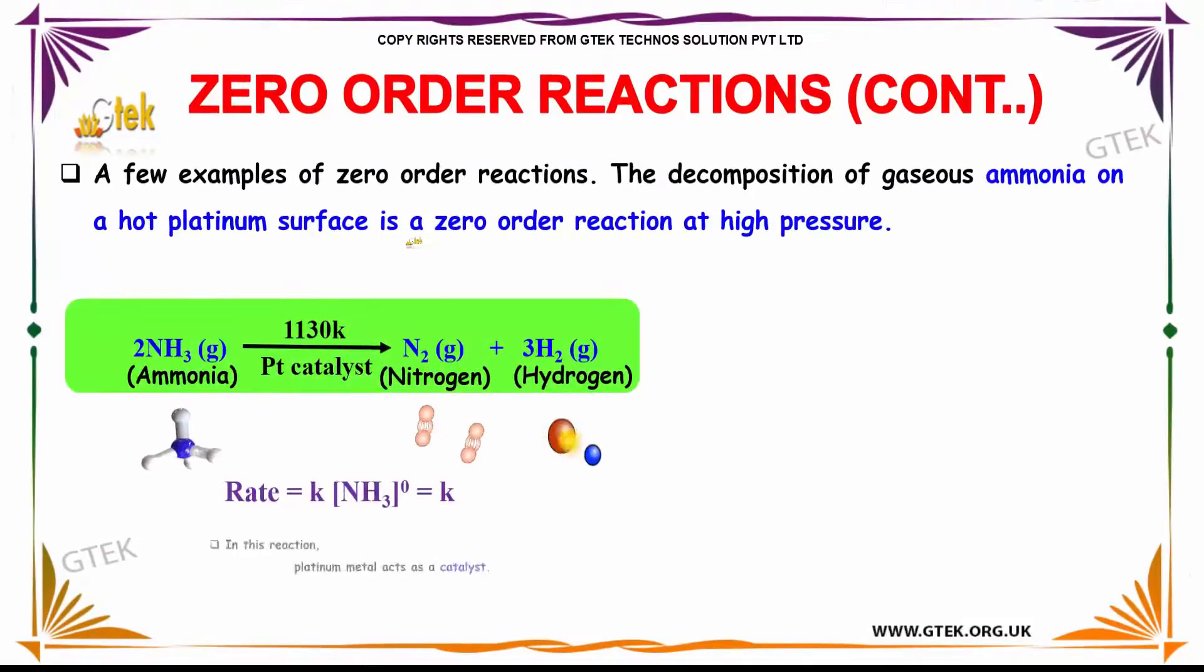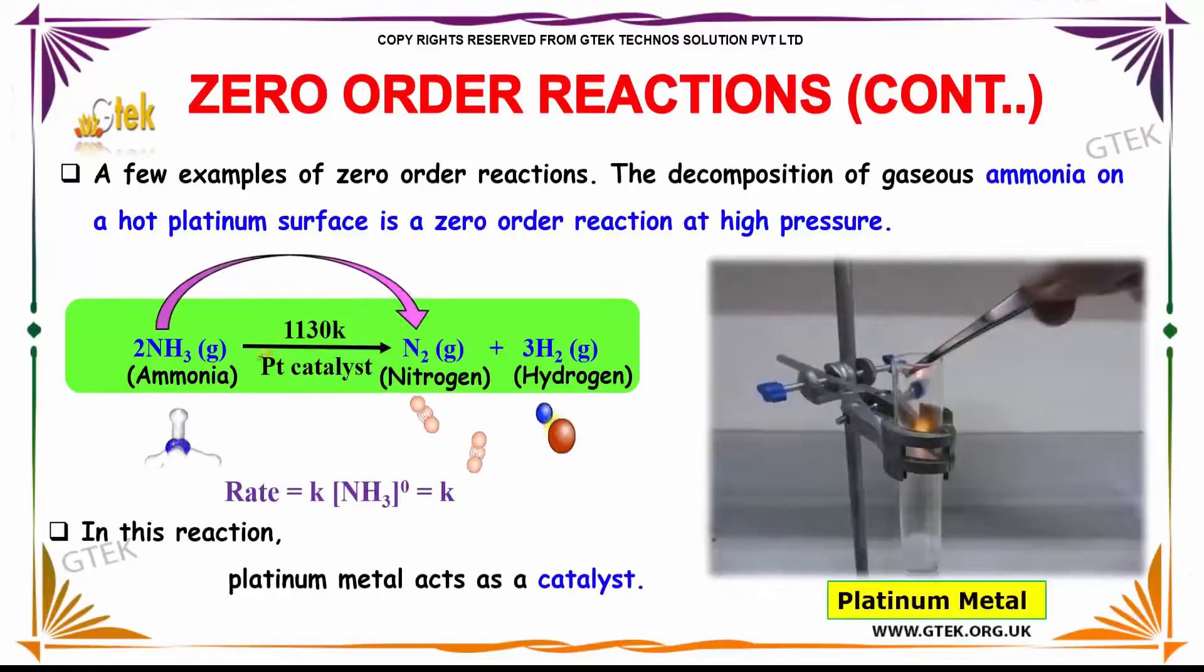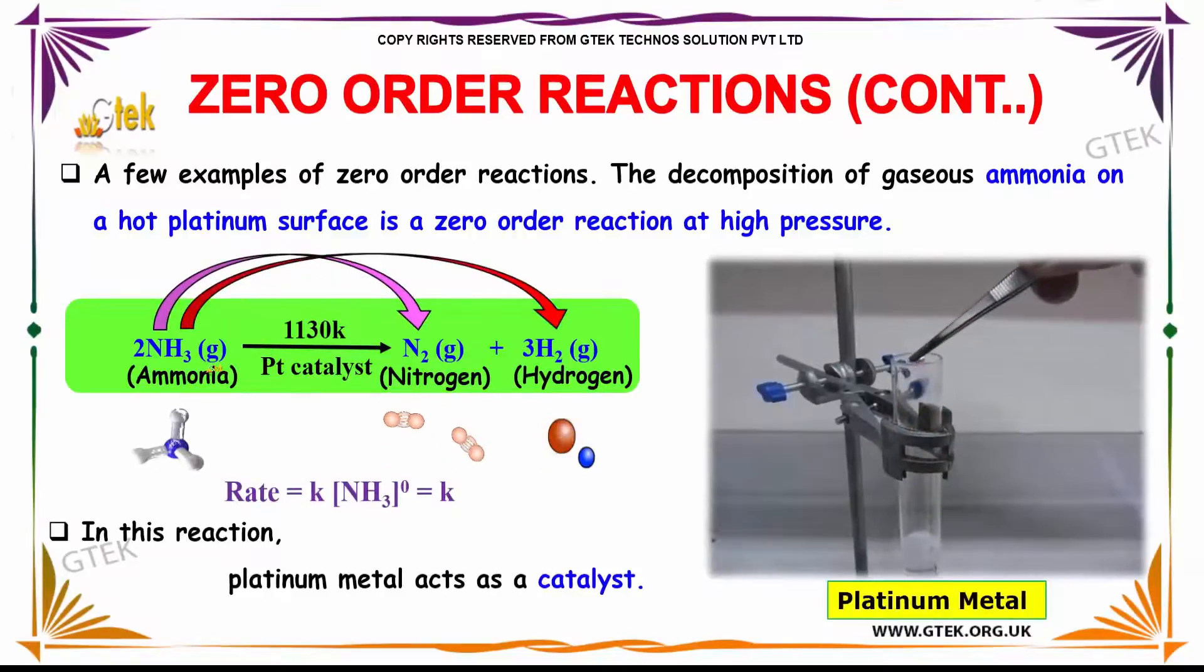A few examples of zero-order reactions are the decomposition of ammonia. Gaseous ammonia on a hot platinum catalyst is a zero-order reaction which gives nitrogen and hydrogen. The rate is given by k[NH3] power zero, which is k. In this reaction, platinum metal acts as a catalyst.